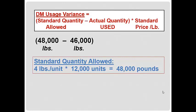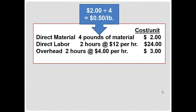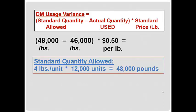So 48,000 pounds standard quantity minus 46,000 pounds actually used. We were supposed to use 48,000 pounds to make 12,000 units and we did use 46,000 pounds. To convert to a dollar amount, we multiply by the standard price per pound. The standard cost per unit is $2, so the standard price per pound is $2 divided by 4 pounds, which equals 50 cents per pound. A 2,000 pound difference times 50 cents gives us a $1,000 variance. This is favorable because we used less materials than allowed, saving money — a $1,000 favorable direct material usage variance.